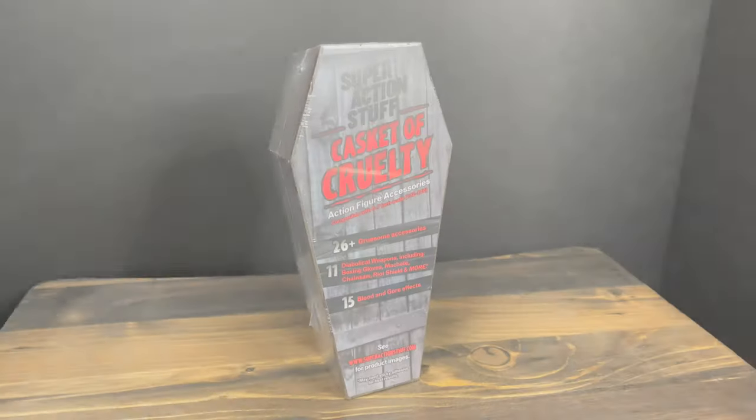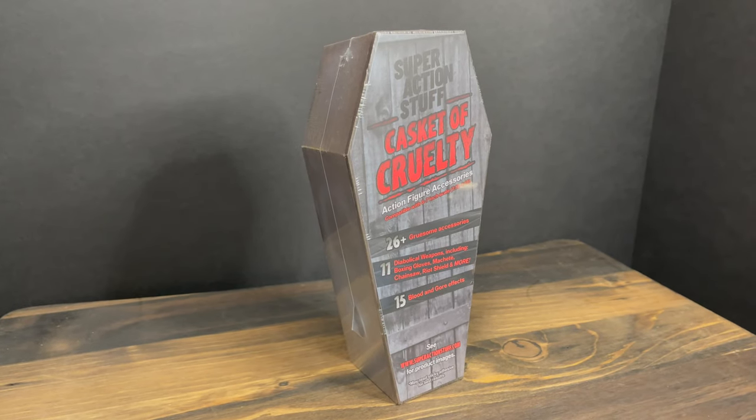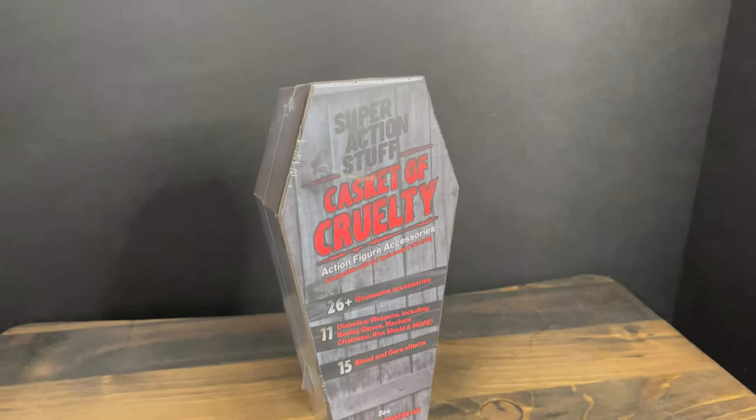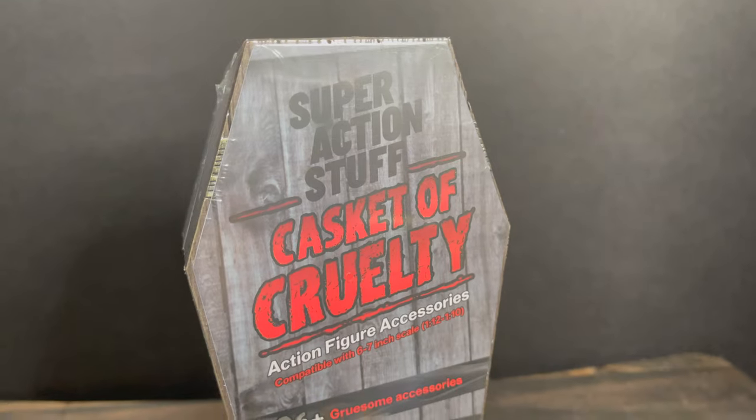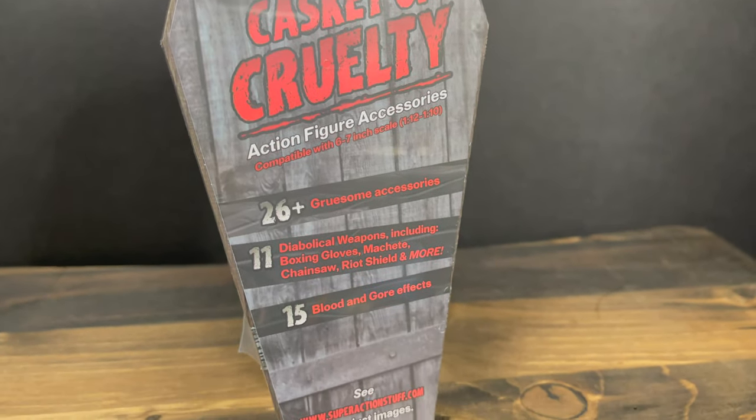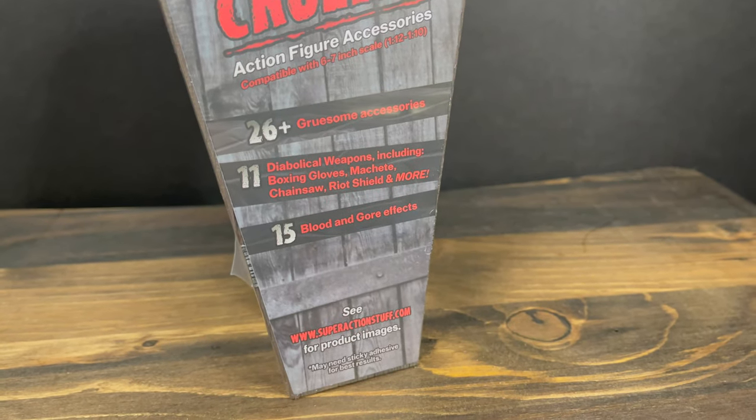Happy holidays everyone and welcome back. Toysha's here and today we're checking out something super by Super Action Stuff. This is their aptly named and probably the best name ever, the Casket of Cruelty. It's a bunch of action figure accessories - 26 gruesome accessories, 11 diabolical weapons, 15 blood and gore effects.